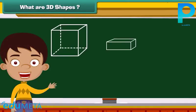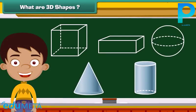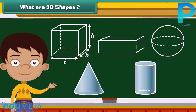Hey, look at these shapes. What did you notice? These shapes have three dimensions: length, width and height. Therefore, we call these shapes three-dimensional shapes.